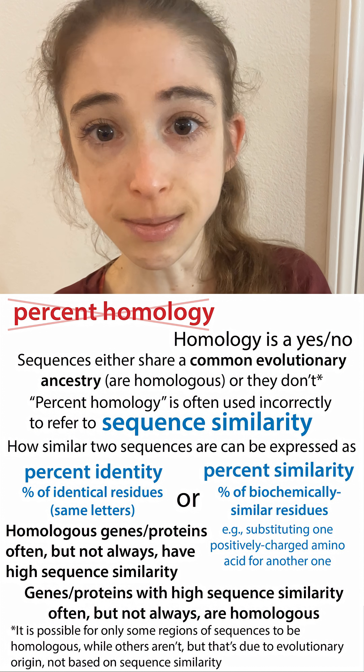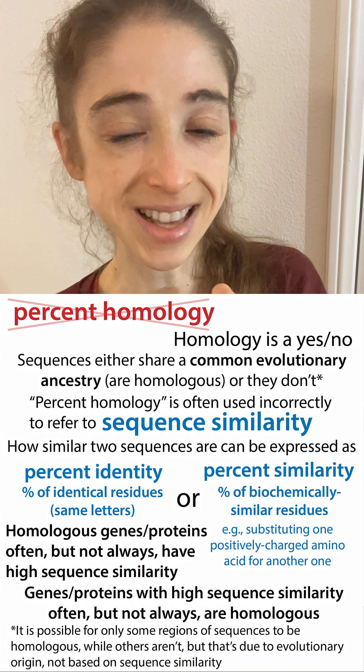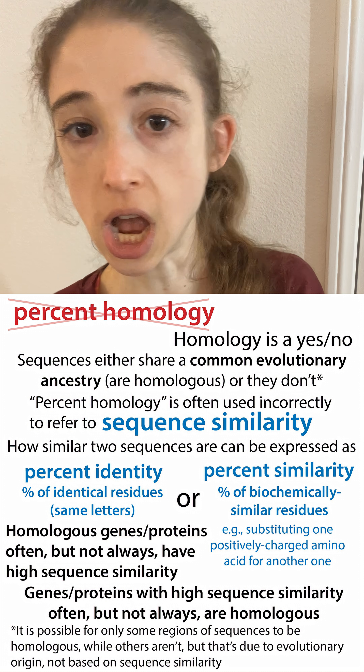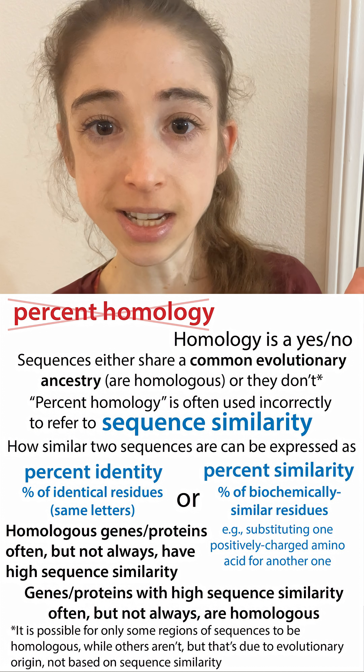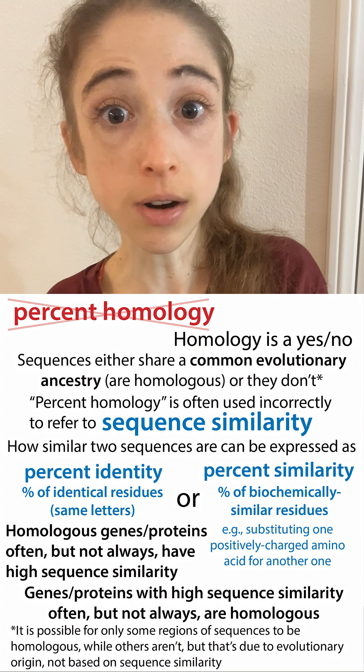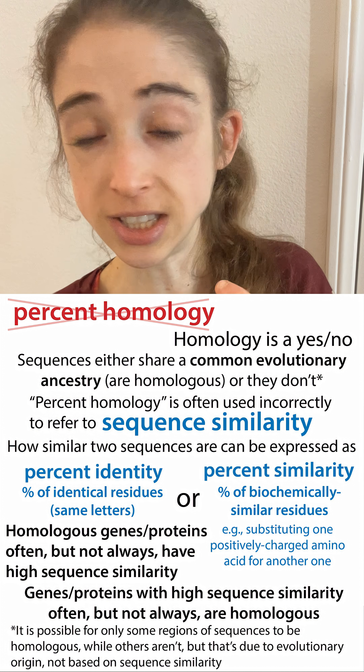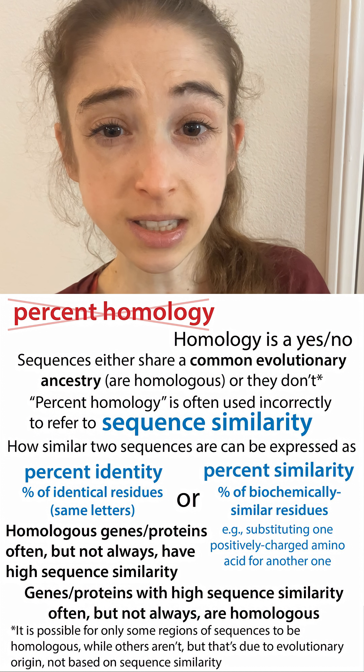The closer the sequences are, the more likely it is that they are homologous, but it's not a guarantee. And if they are homologous, it's either a yes or a no — it's not a percent.